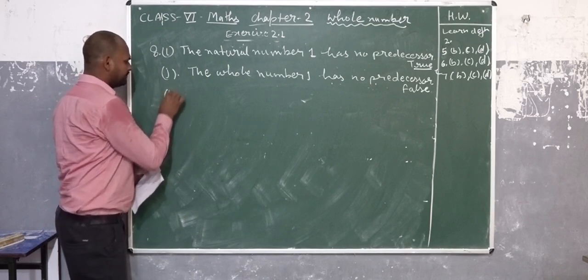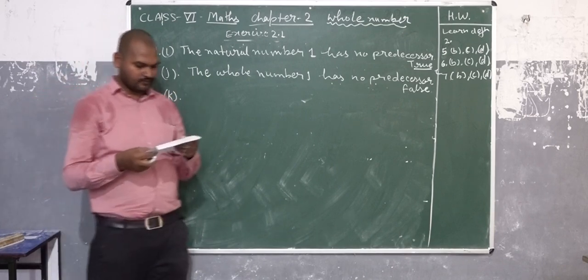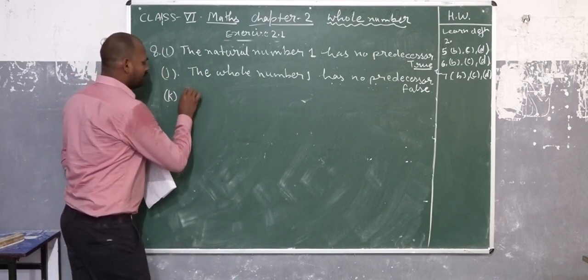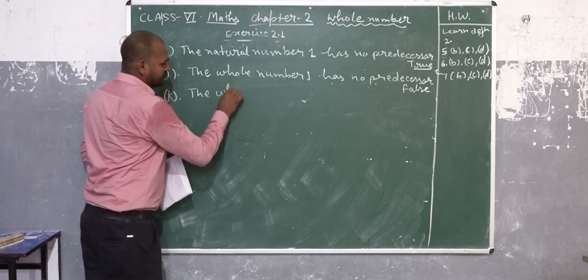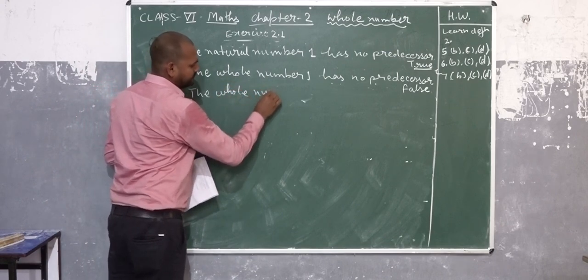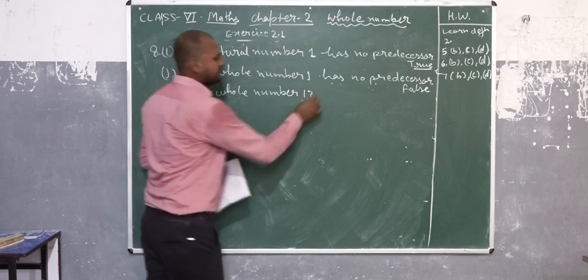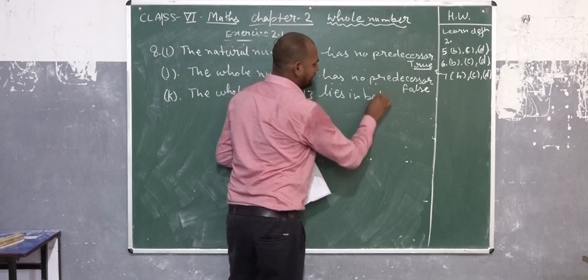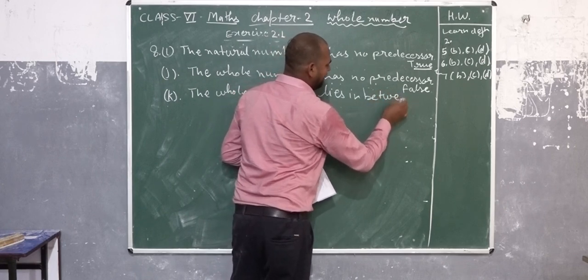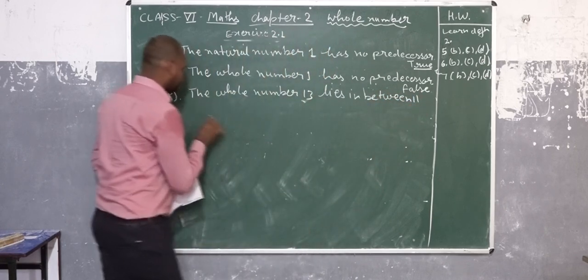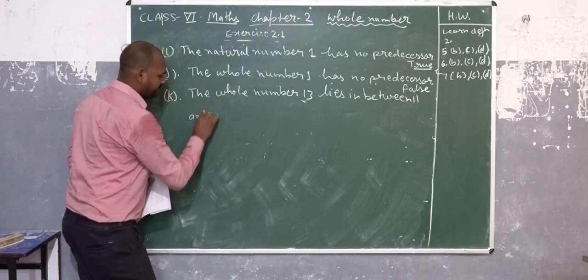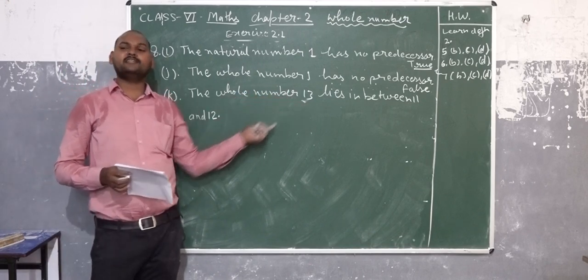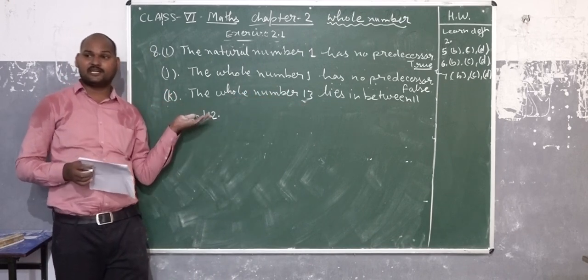J.K. The whole number 13 lies in between the event 11 and 12. See, from the statement it is clear. How 13 is right in between the event 11 and 12, or if numbers and then they are 42.